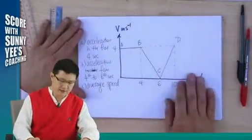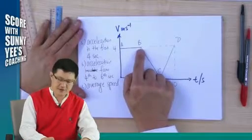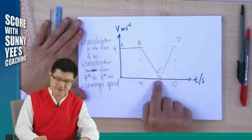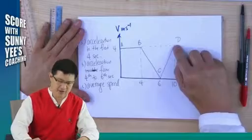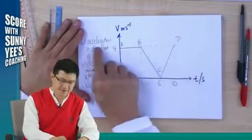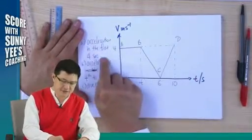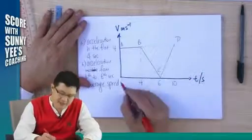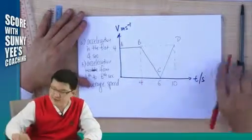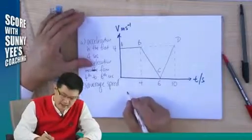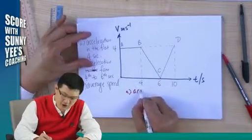Let's look at this example. You have the graph constant velocity, decreasing velocity, increasing velocity A, B, C, D. Find the acceleration of the first 4 seconds. So the acceleration of the first 4 seconds. Acceleration comes from what? Acceleration is your gradient.